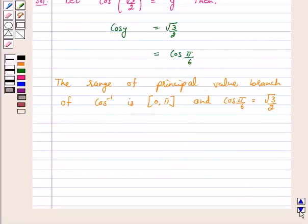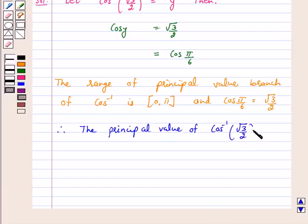Therefore, the principal value of cos inverse of root 3 by 2 is pi by 6.